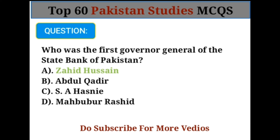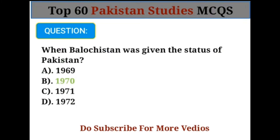Who was the first Governor General of the State Bank of Pakistan? Option A: Zahid Hussain. When was Balochistan given the status of a full province? Option B: 1970.